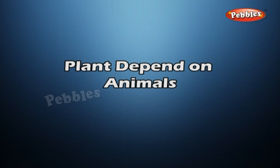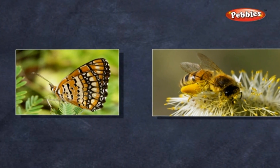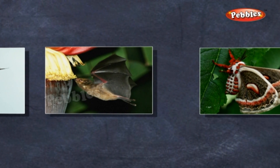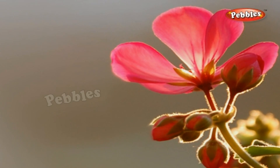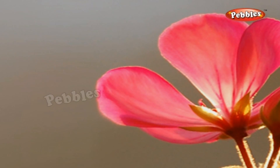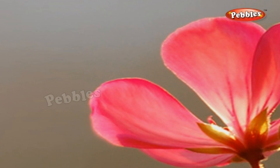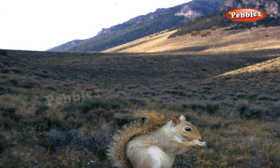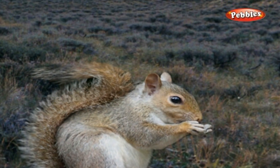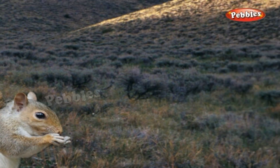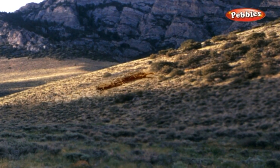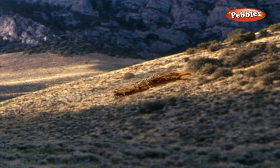Plants depend on animals. Some animals, such as the butterfly, honeybee, hummingbird, bat, or moth, help to pollinate flowers. Without pollination, flowering plants cannot form seeds, and hence cannot reproduce. Animals also help in dispersal of seeds. Several seeds or fruits have hair or spines on them; these stick to the animal's skin or fur and are carried to long distances. Animal excreta and their dead bodies add nutrients to the soil, acting as manure and providing minerals for plant growth.